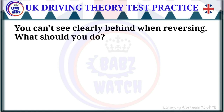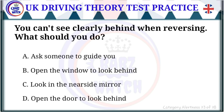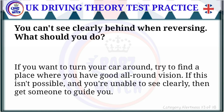Question 23 of 28: You can't see clearly behind when reversing. What should you do? The correct answer is: ask someone to guide you. If you want to turn your car around, try to find a place where you have good all-round vision. If this isn't possible and you're unable to see clearly, get someone to guide you.